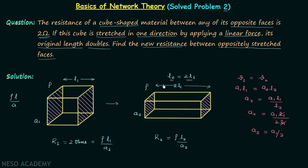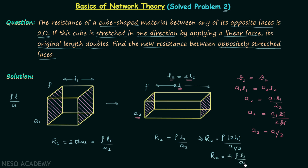When we increase the length to 2 times the original, the area becomes half the original. Therefore R2 equals Rho times 2L1 divided by (A1/2), which simplifies to R2 equal to 4 times Rho times L1 over A1. Since Rho times L1 over A1 equals R1, and R1 equals 2 ohms, we get R2 equal to 4 times R1.